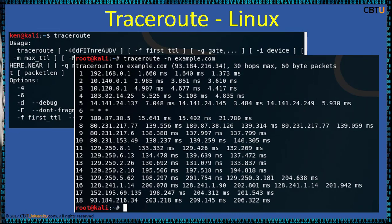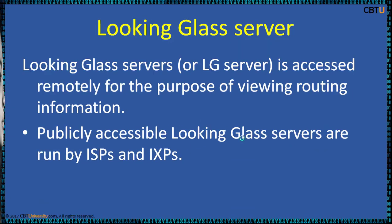In Linux, to avoid DNS resolution use the -n switch: traceroute -n domain, then hit enter. A Looking Glass server, or LG server, is accessed remotely for the purpose of viewing routing information.